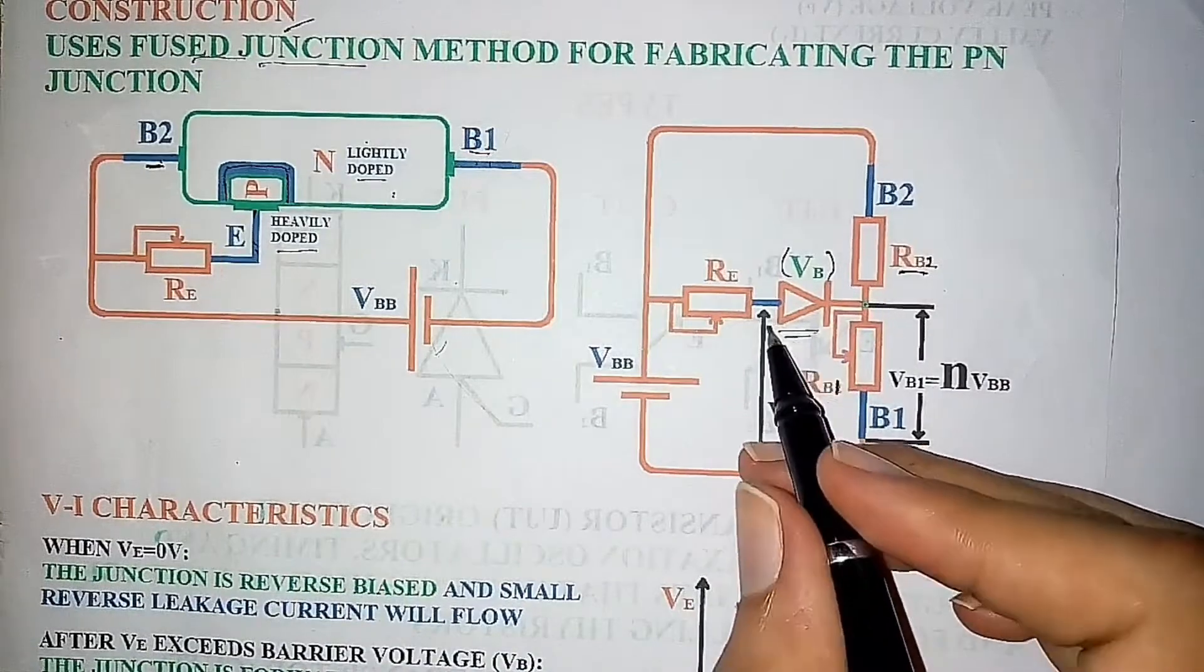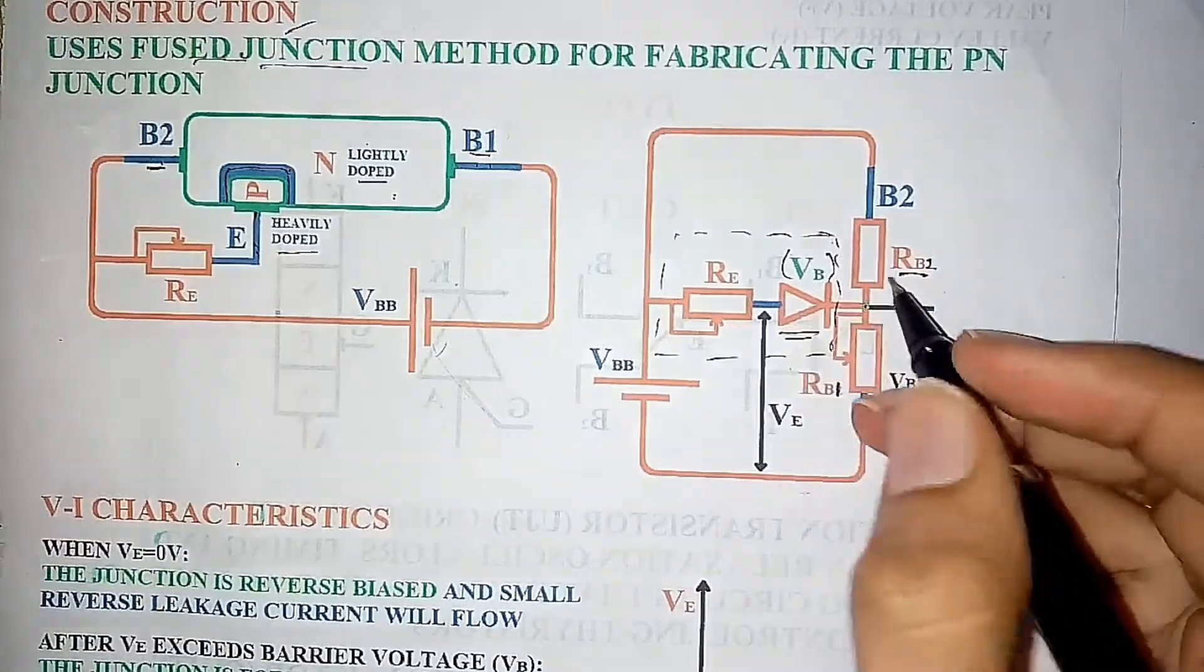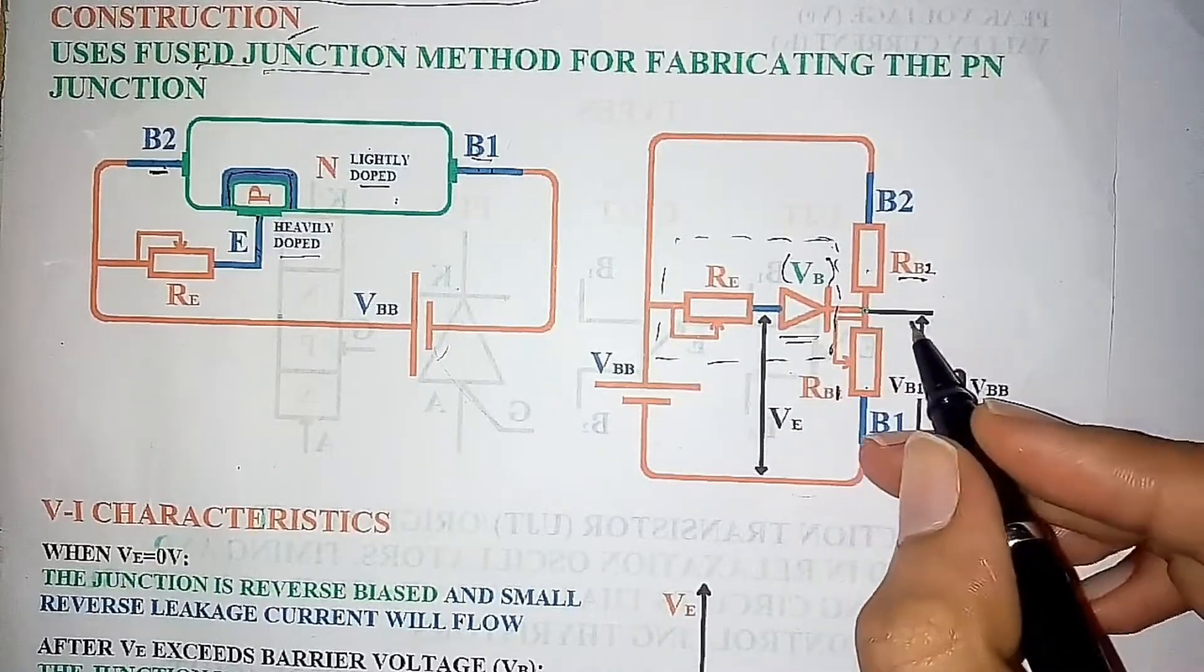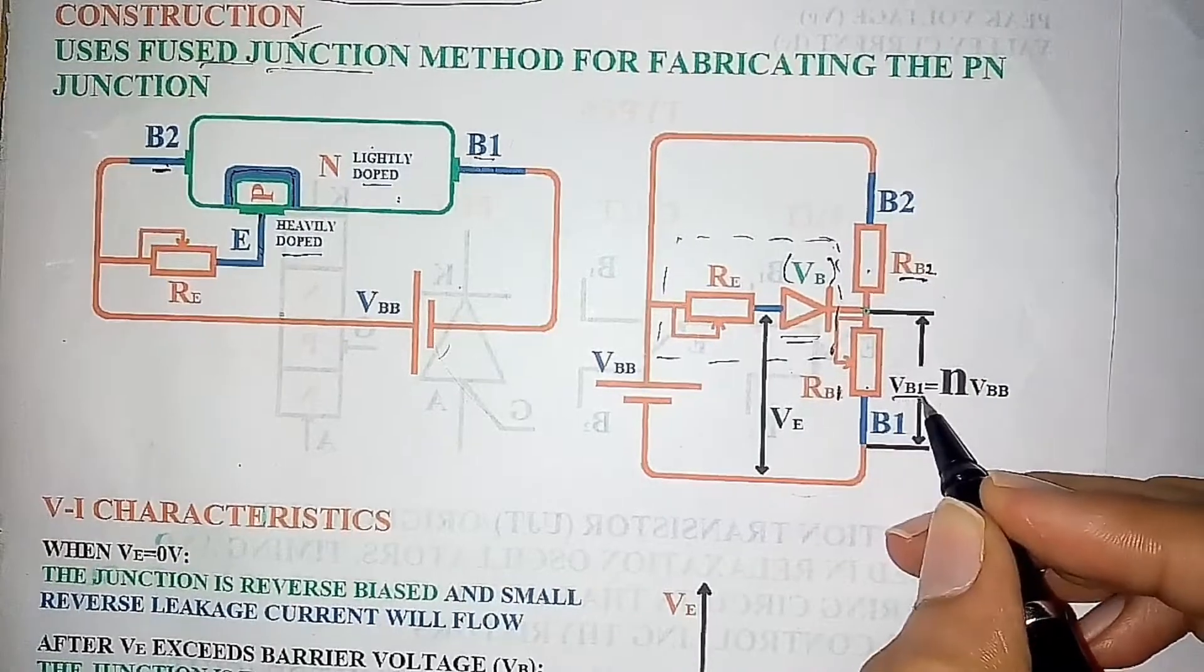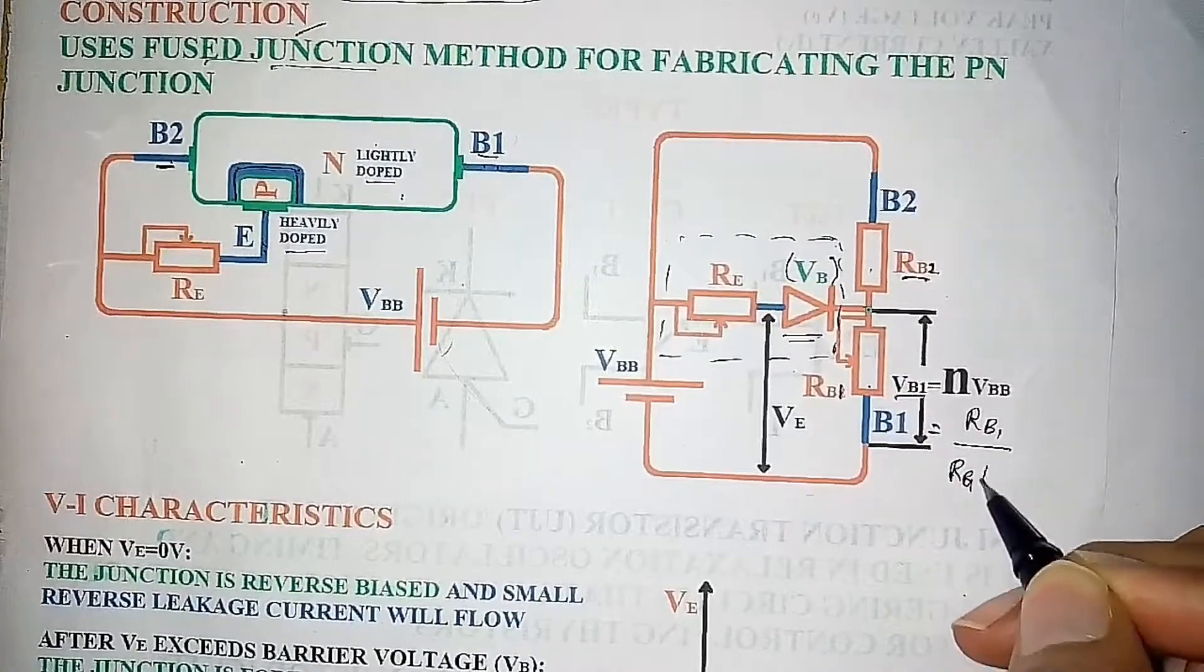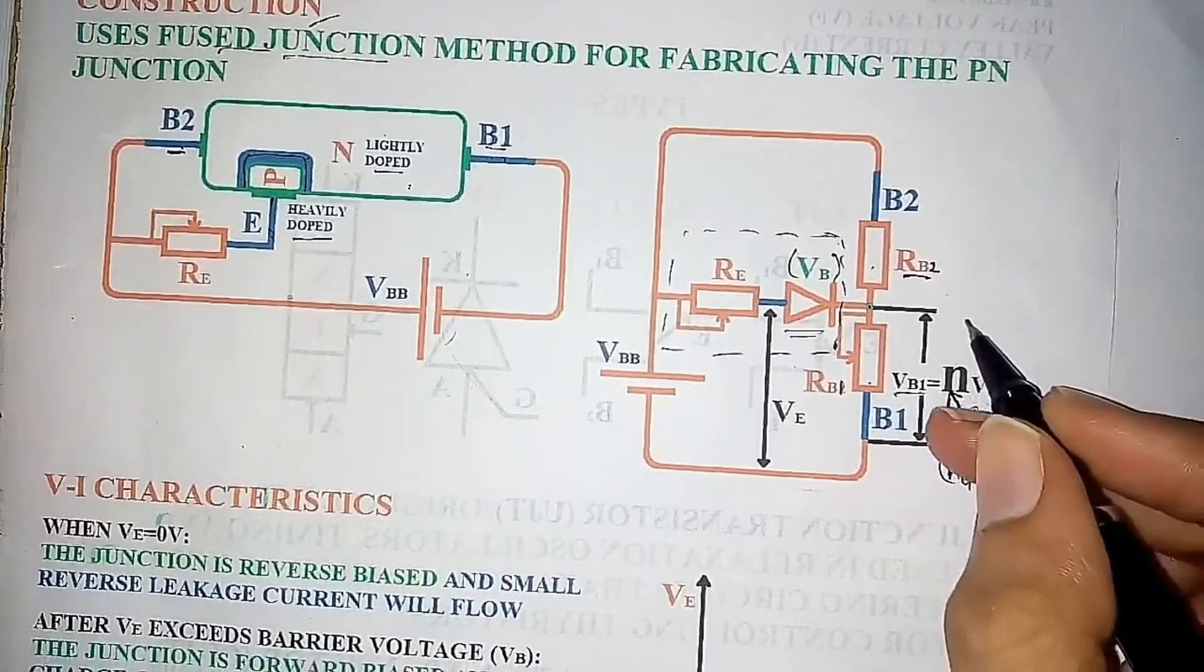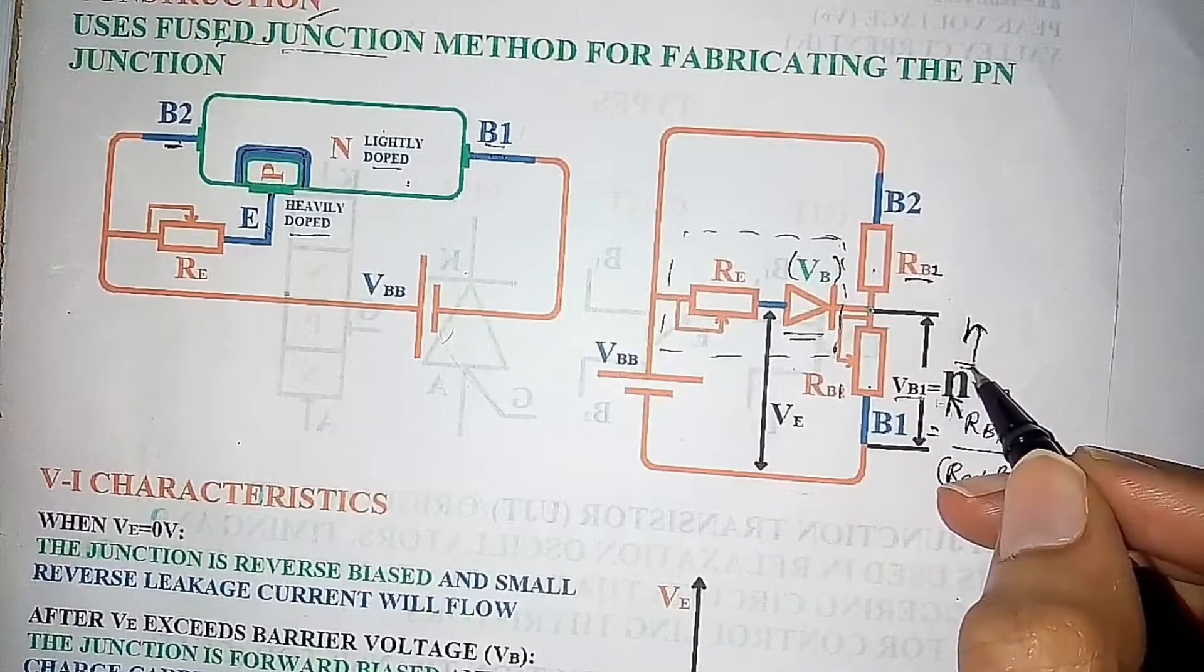Now, if we observe this diagram, excluding this part, it looks just like a voltage divider with VBB as the source voltage. Applying voltage division rule, voltage across RB1 is given by VB1 which is RB1 by RB1 plus RB2 into VBB and this value is denoted by ETA which is termed voltage standoff ratio.